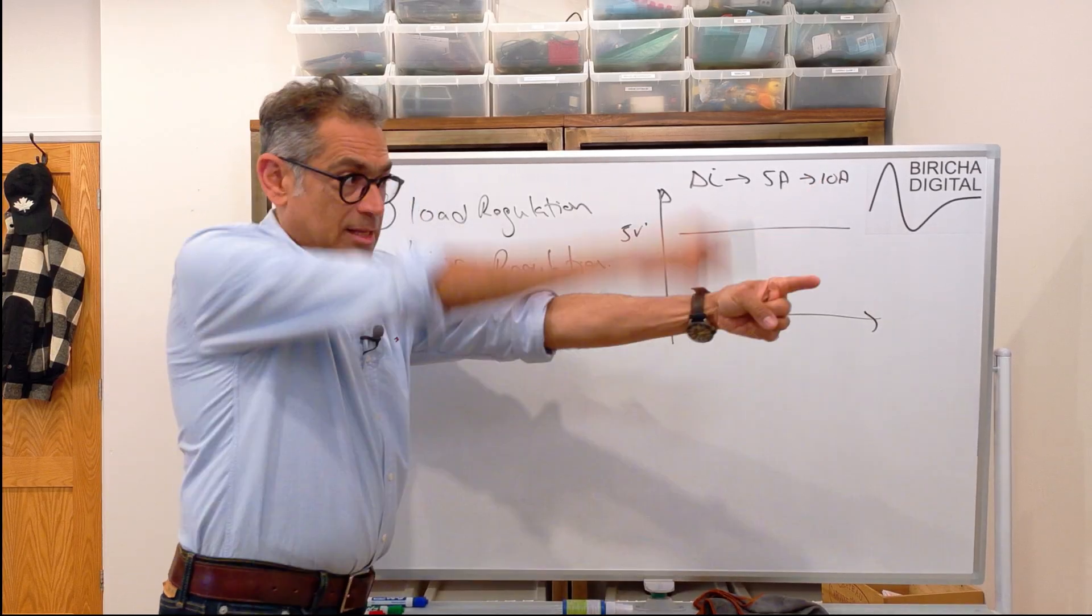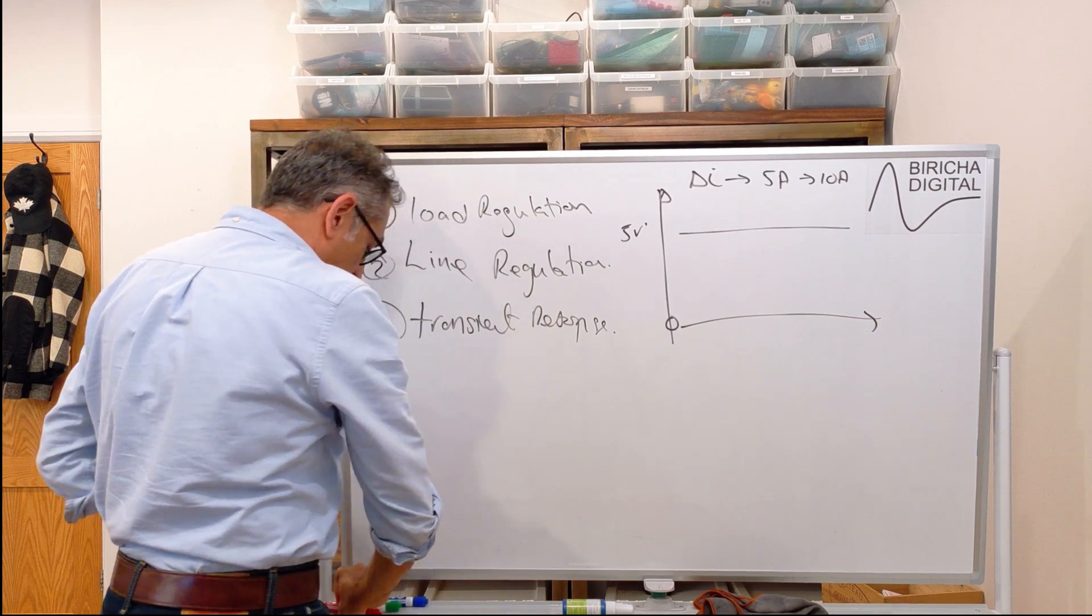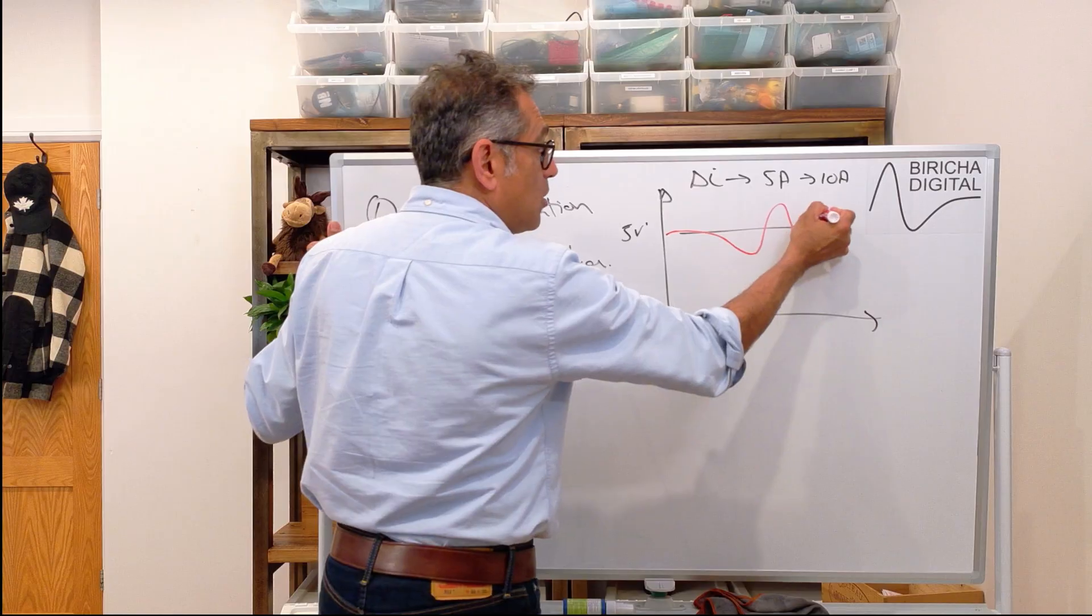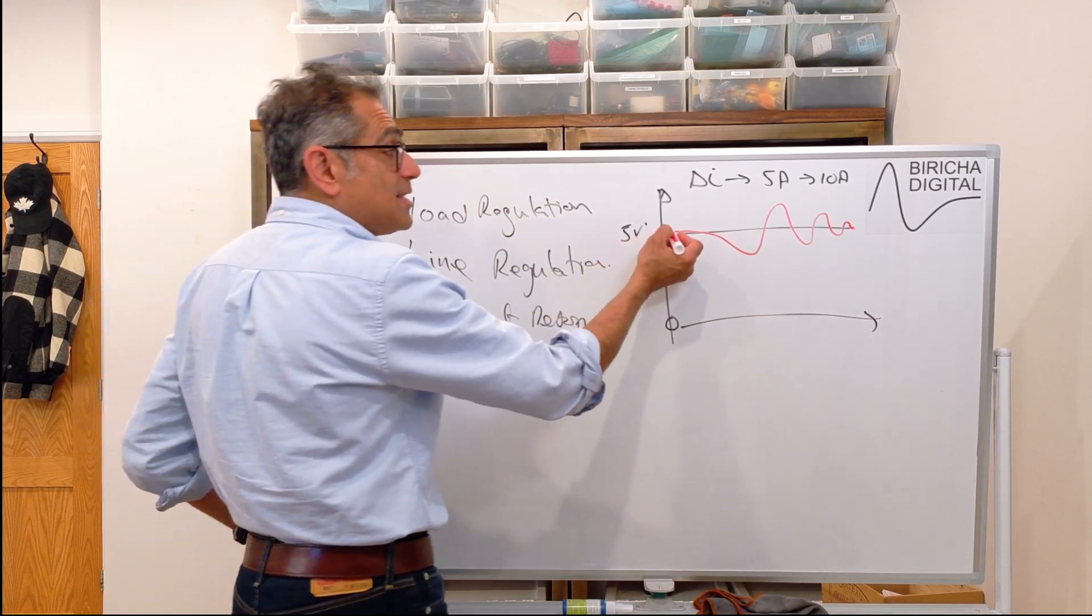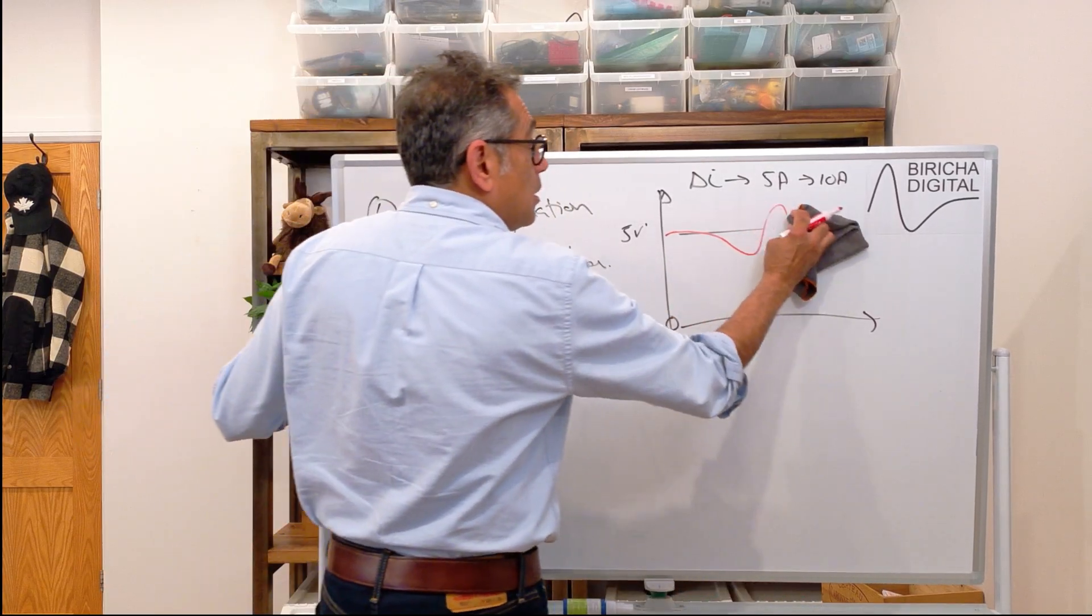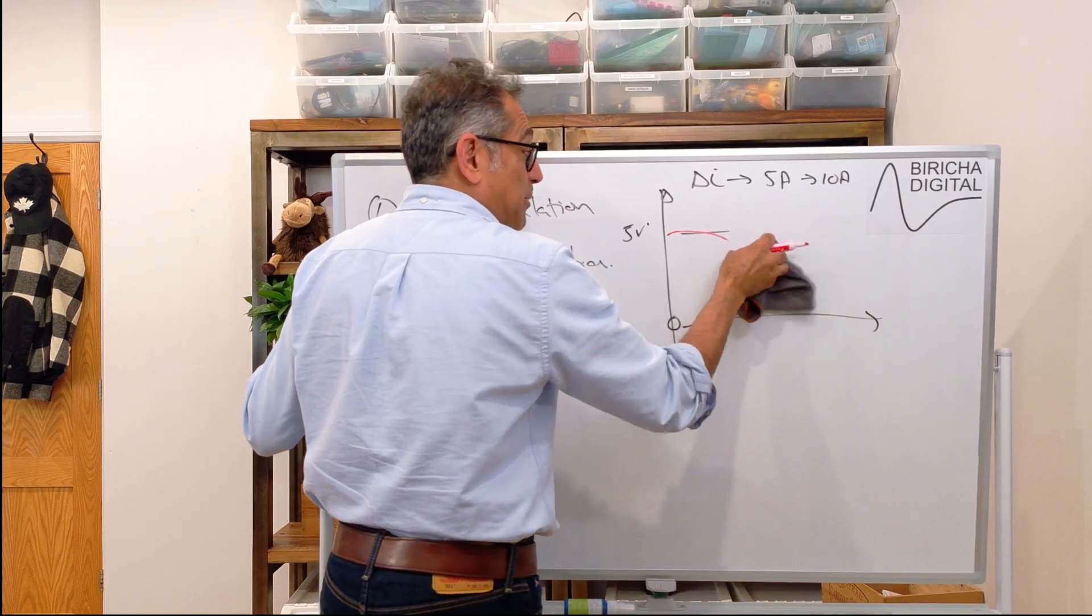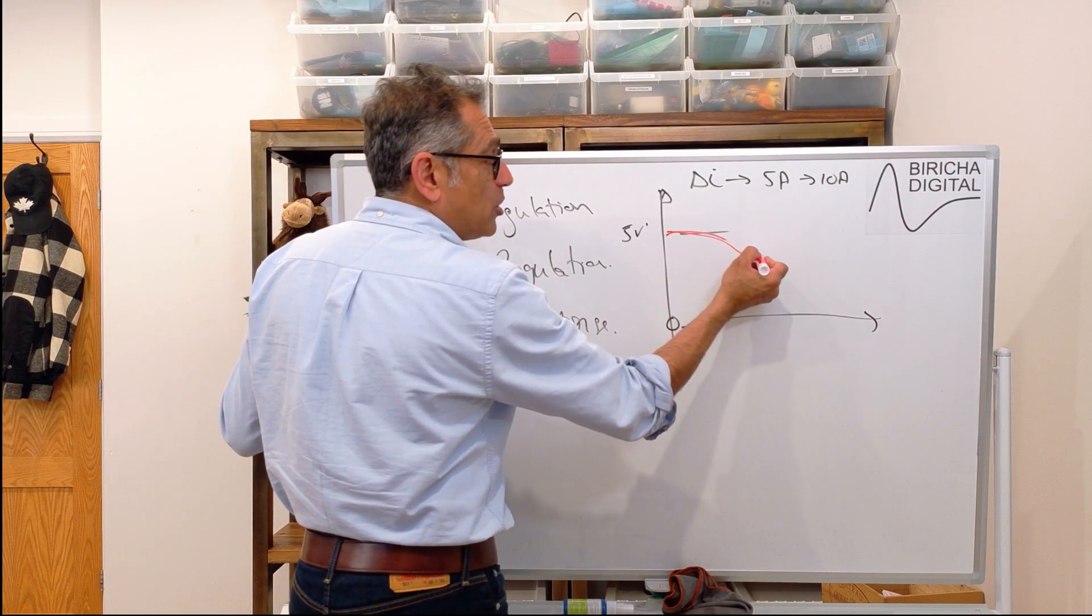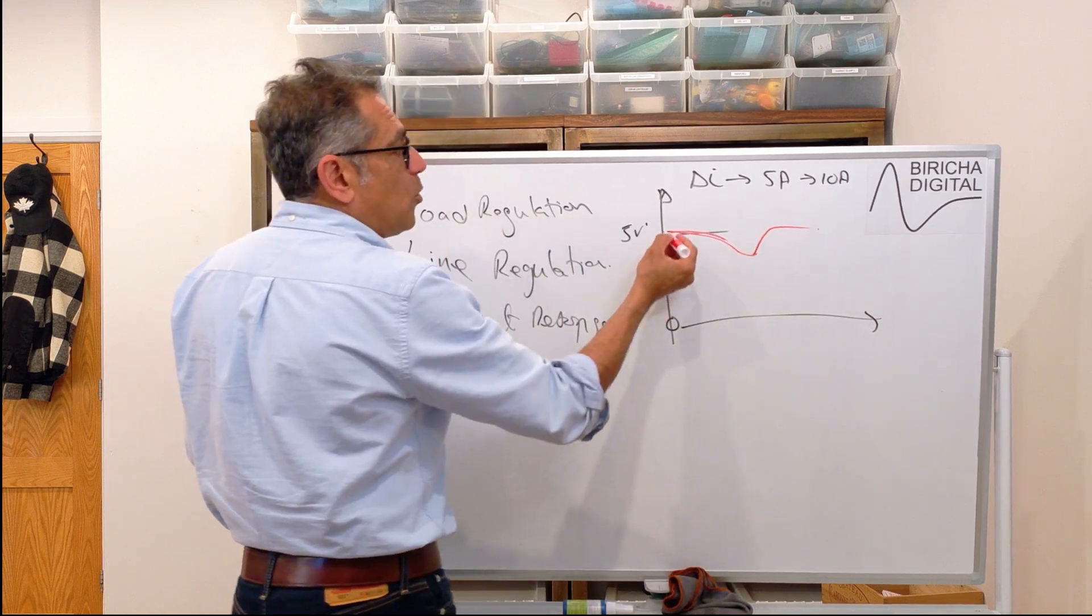That load step is similar to this transient that I had—I was trying to get to that position. We do not want the output of the power supply after a load step to dip and then oscillate like this. In an ideal world we want this to recover as fast as possible. So we would like the power supply—in an ideal world you don't want it to dip at all, but in reality it doesn't work like that. So in reality it's going to dip, then we're going to recover as quickly as possible without overshooting. We don't want to recover slow and we don't want to oscillate either.